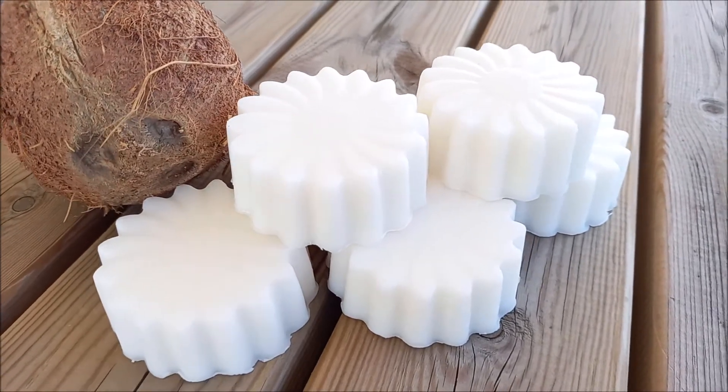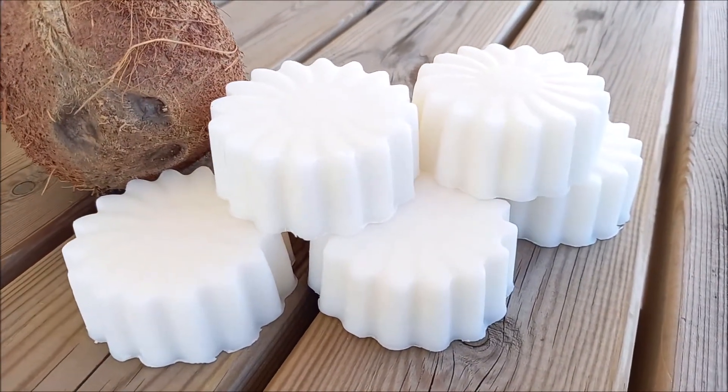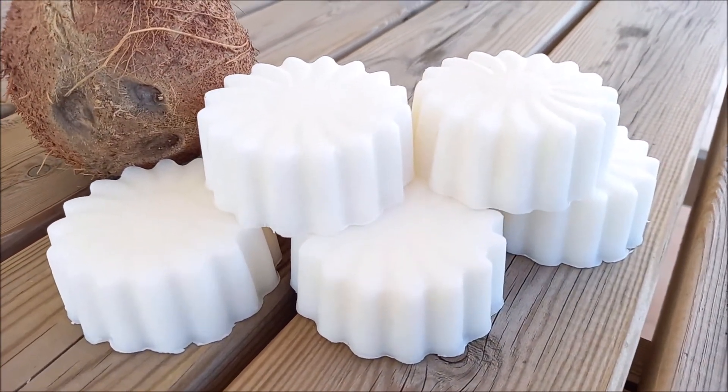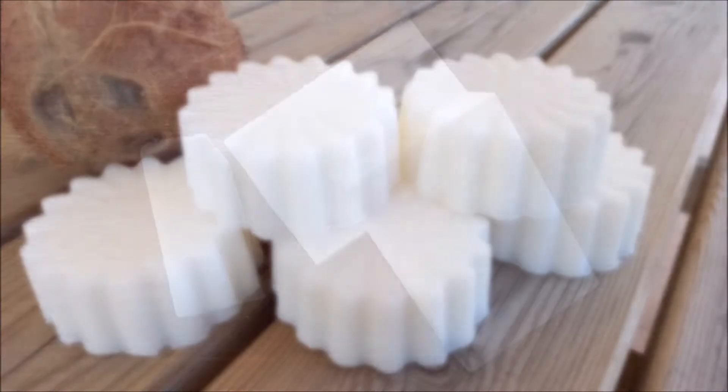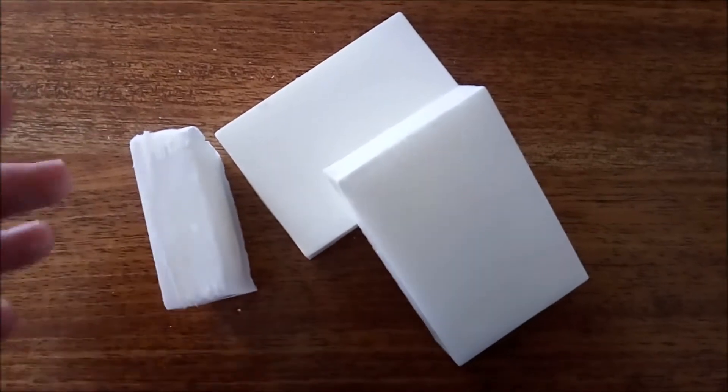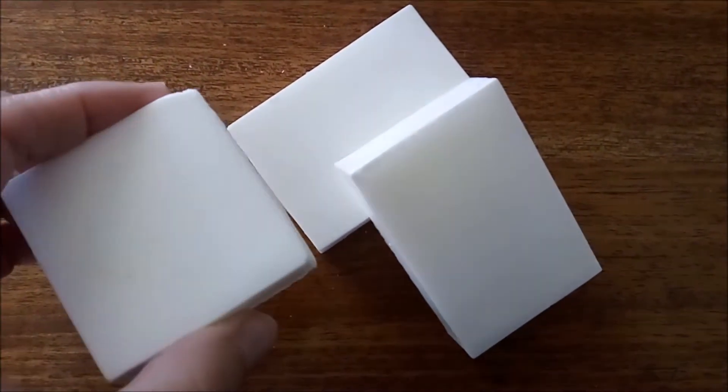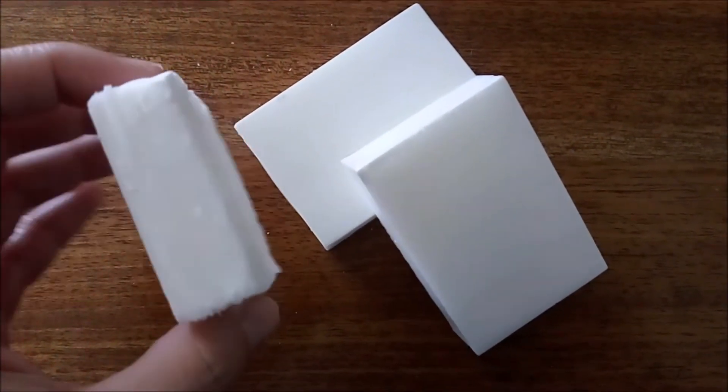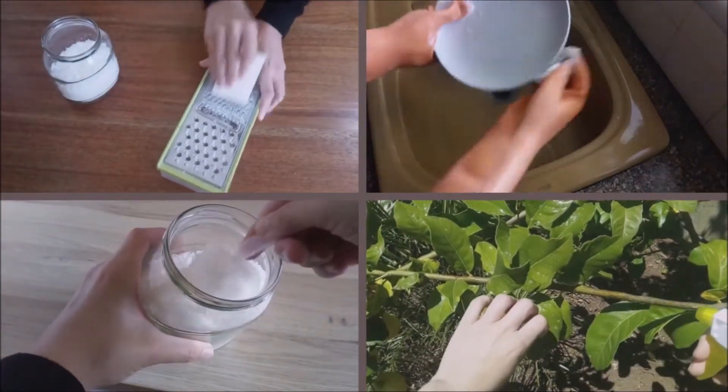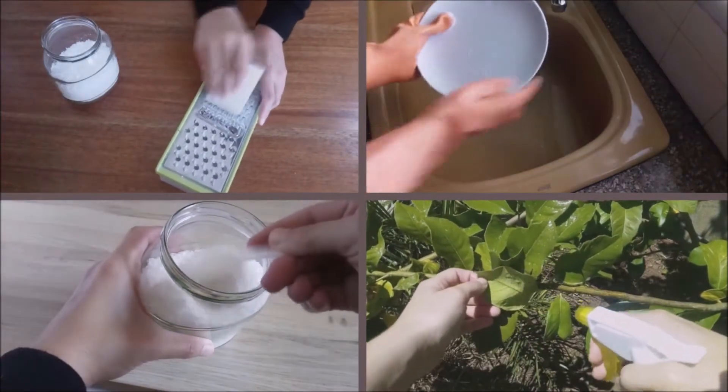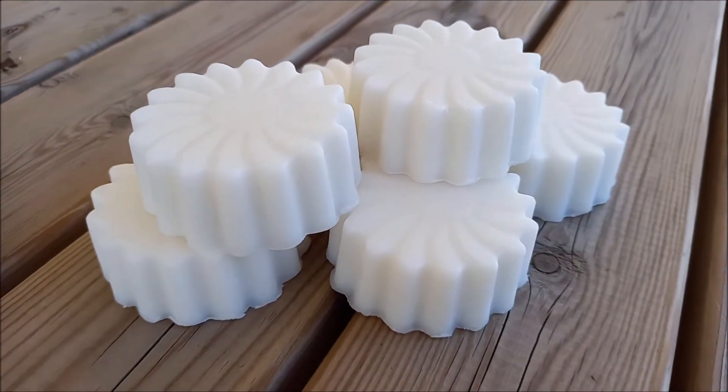Coconut soap has many benefits for both skin and hair. In this video we will show you how to make this soap step by step using the cold process. Coconut soap can also be used in household cleaning and as a natural insecticide, however the recipe is different. Watch this suggested video to know how to make coconut soap to use against garden and orchard pests. Now let's see how to make coconut soap for the skin.